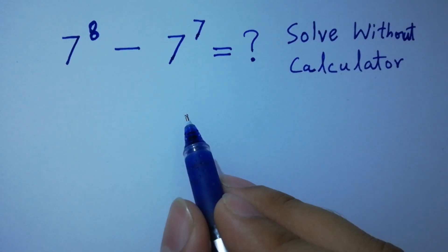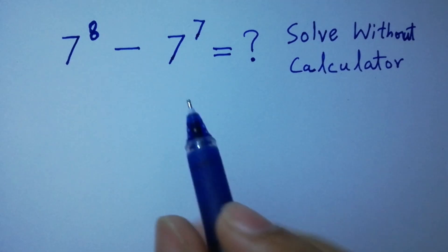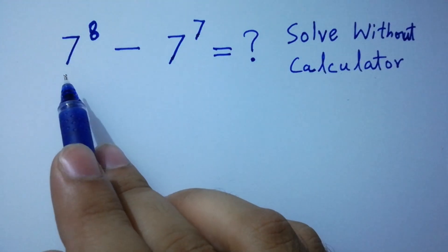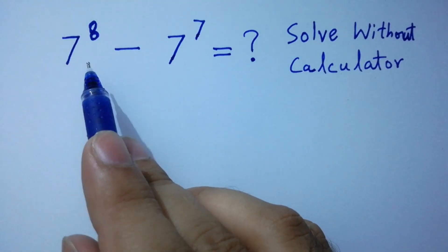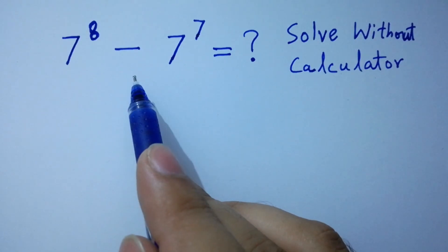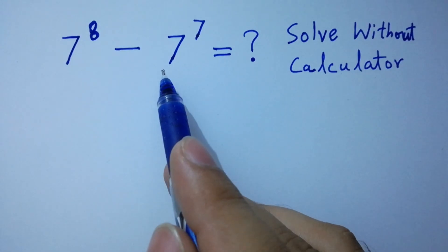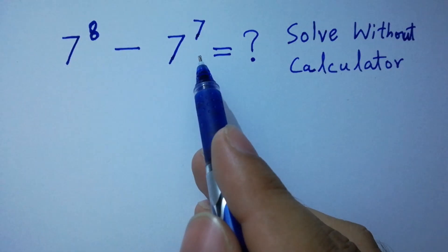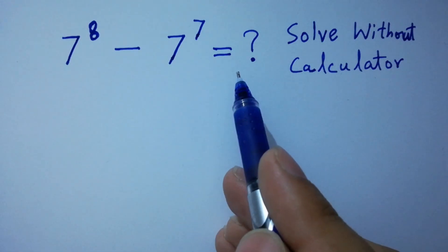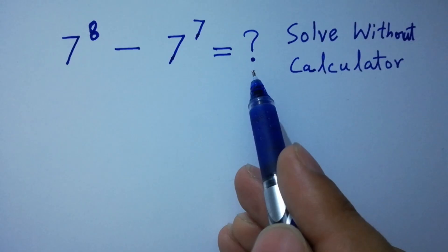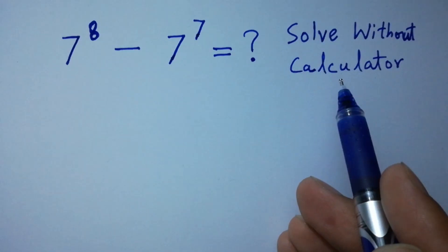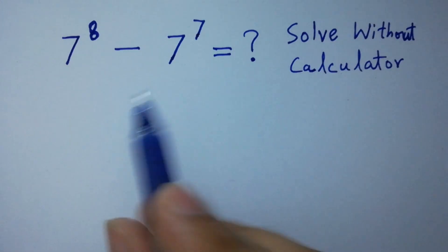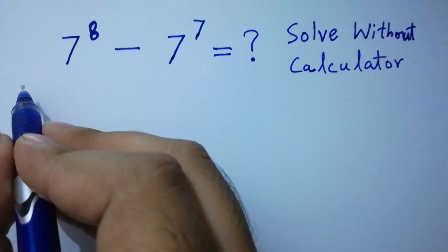Hello friends! 7 to the power 8 minus 7 to the power 7 equals what? Solve without calculator. Let's have a solution.